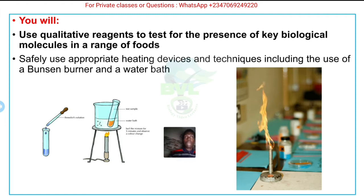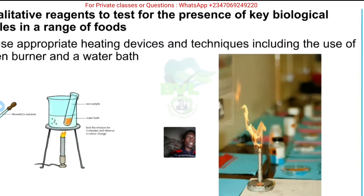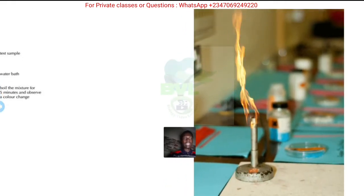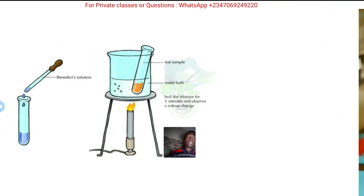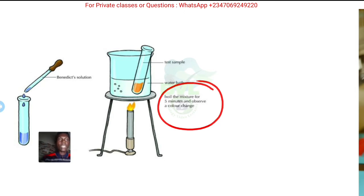To carry out these tests safely you need to use appropriate heating devices and techniques, including the Bunsen burner and water bath. The Bunsen burner here is connected to a gas cylinder. The water bath is used to create an optimum temperature for the reaction. For example, when carrying out the Benedict test for sugar, the test tube has to be kept in a water bath for about five minutes. The warmth of the water heats the contents of the tube - you're not expected to put the test tube directly into a flame, as that would be too much heat and could denature the enzymes.